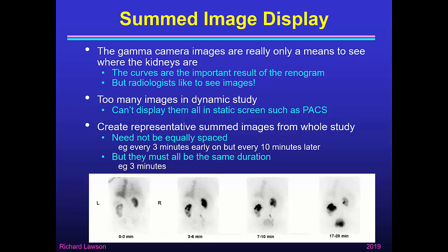Here's an example. The first image is from naught to three minutes, and the next one from three to six minutes — each three-minute duration with no gap between them when things are changing fairly quickly. But then we leave a gap, and the next image is from seven to ten minutes, and then another gap, and the next one is from seventeen to twenty minutes. The duration of each image is the same, so they can be compared.